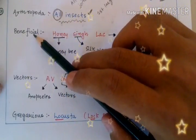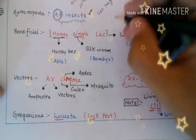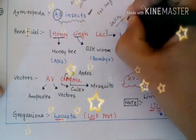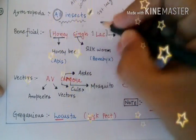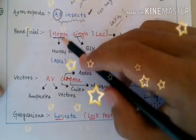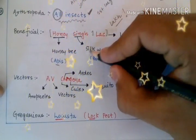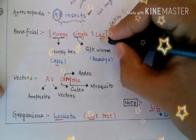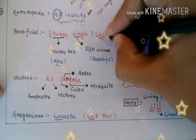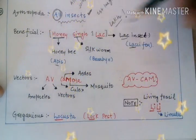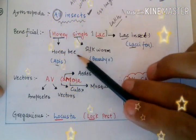The first category is the beneficial Arthropods. The trick to remember the beneficial Arthropods is 'Honeysink Lack,' where Lack simply means one lakh. So the beneficial Arthropods are remembered by the trick 'Honeysink Lack.'